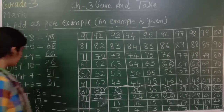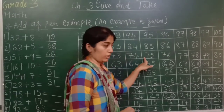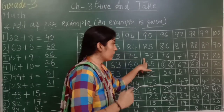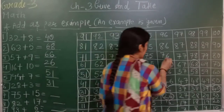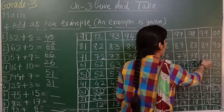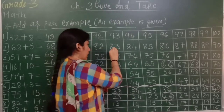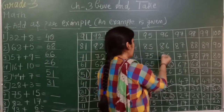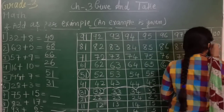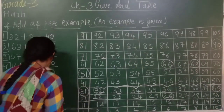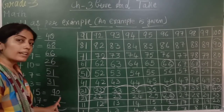Next: 75 plus 15. 75 kahaan hai? 75 ye yahaan. 75 pe khaade hoke, humko 15 numbers jump karna hai, toh 15 steps chalna hai. One through fifteen. Answer is 90. Agar hum 75 plus 15 karenge toh answer kya hoga? 90.